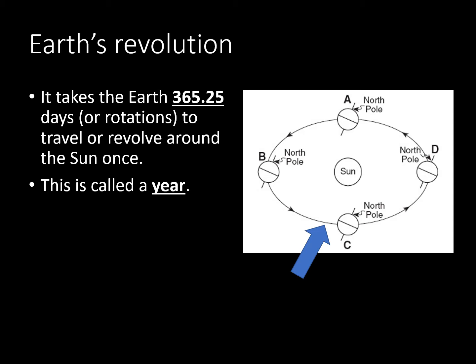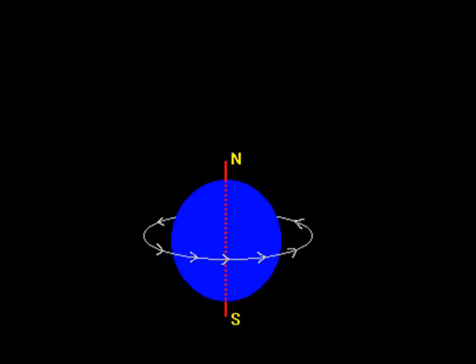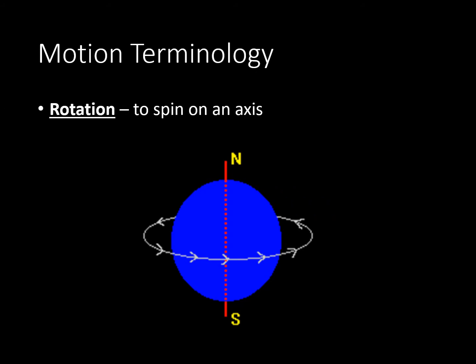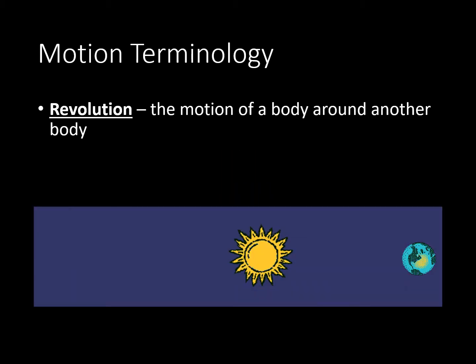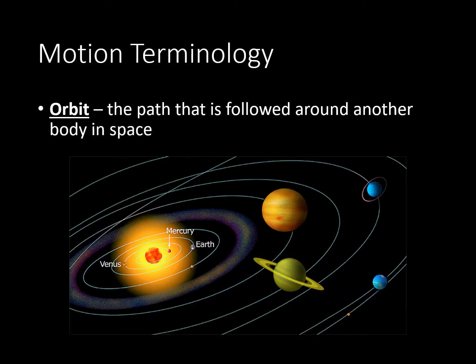Earth's revolution: it takes the earth 365.25 days to travel or revolve around the sun — this is called a year. Rotation means to spin on an axis. Revolution means the motion of a body around another body. An orbit is the path that is followed around another body in space.